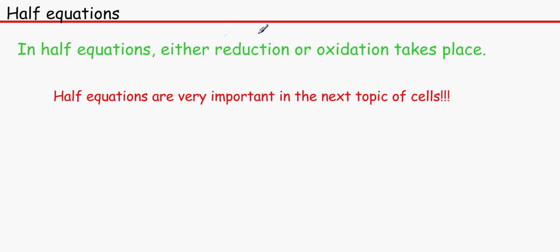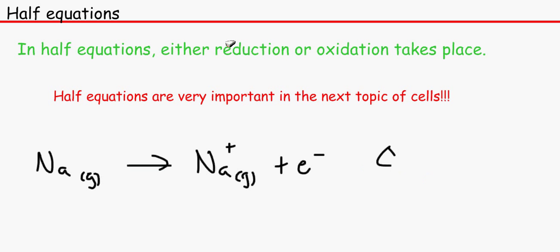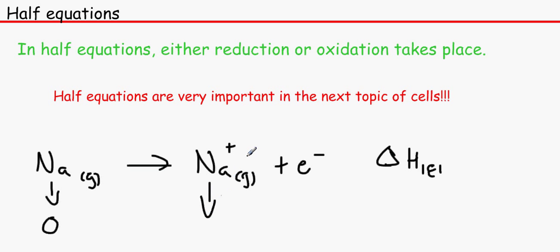For half equations, only reduction or oxidation takes place. Let's say we have the first ionization energy of sodium — we have sodium as a gas, and that makes sodium⁺ plus the electron that we've just lost, with ΔH IE1. We know that the oxidation state of uncombined Na is 0, because it has not combined with anything. Over here, the oxidation state will be +1.